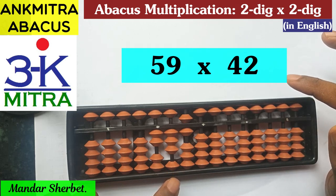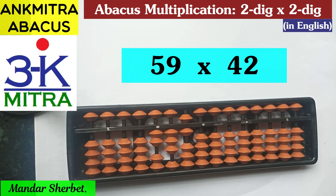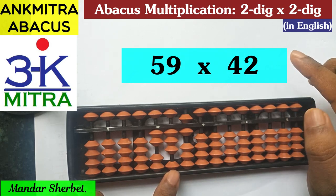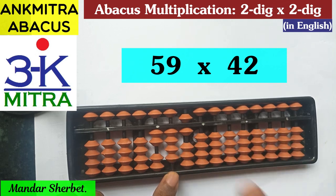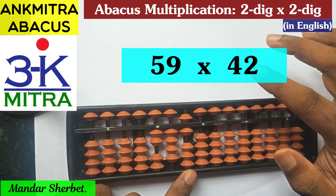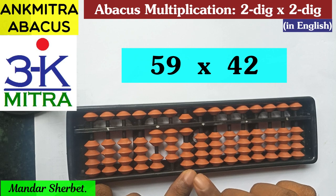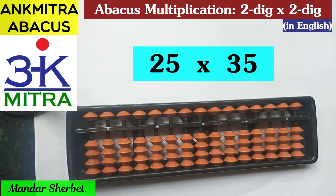For the second part, we consider the units place digit of 42, which is 2. This 2 will be used to multiply each of the digits of 59, starting from the third rod. So 2 multiplied by 5 is 10 — I add 1 here and 0 on the next rod. Moving one place to the right for the final step: 2 multiplied by 9 is 18, so 18 is added from the second rod — 1 here and 8 on the units place. The answer for 59 multiplied by 42 is 2478.